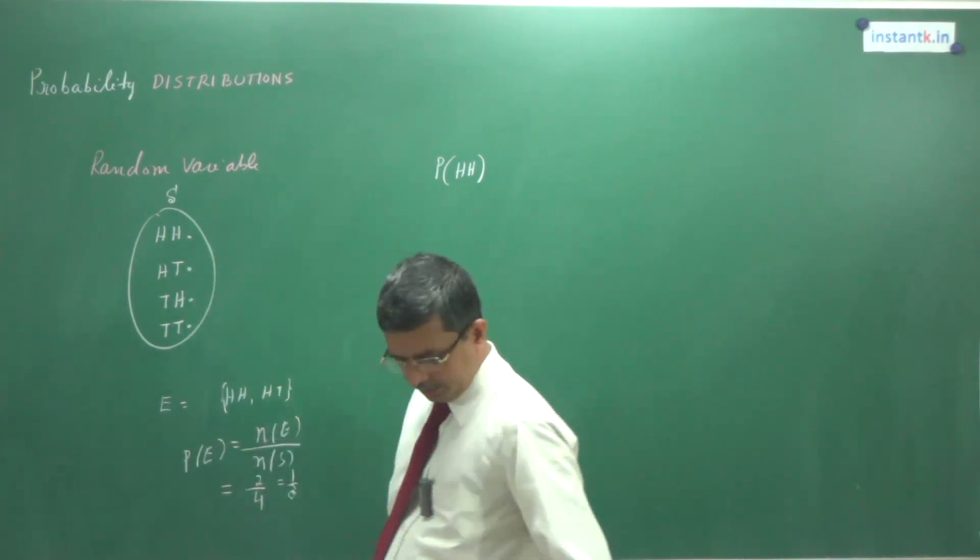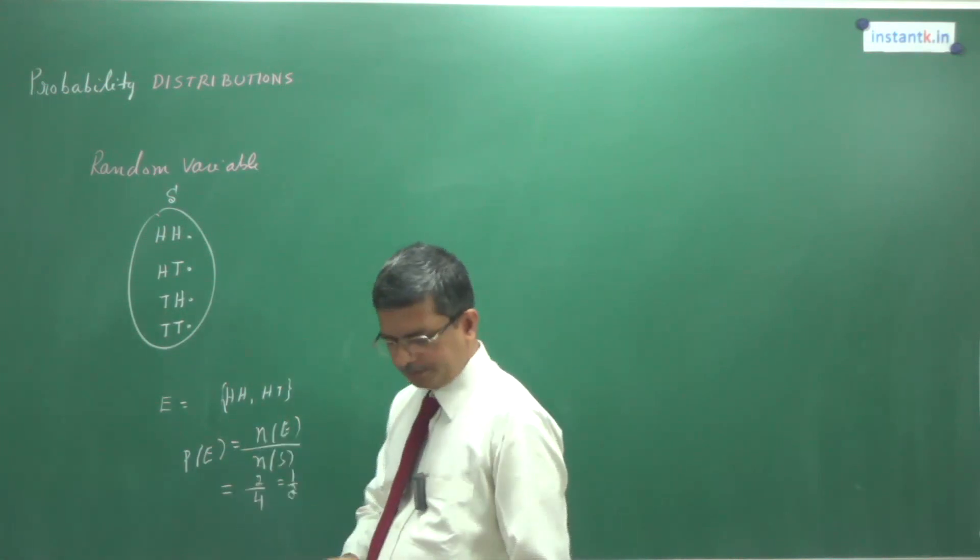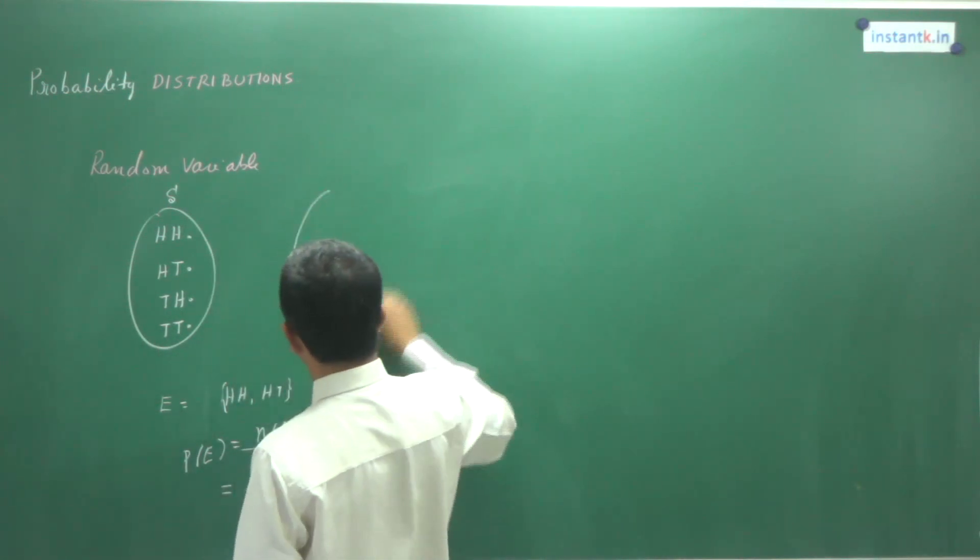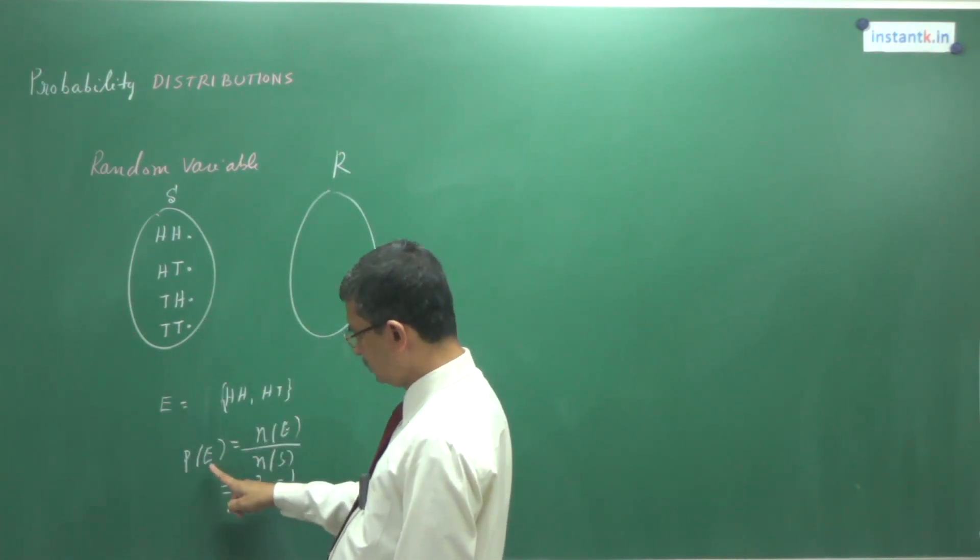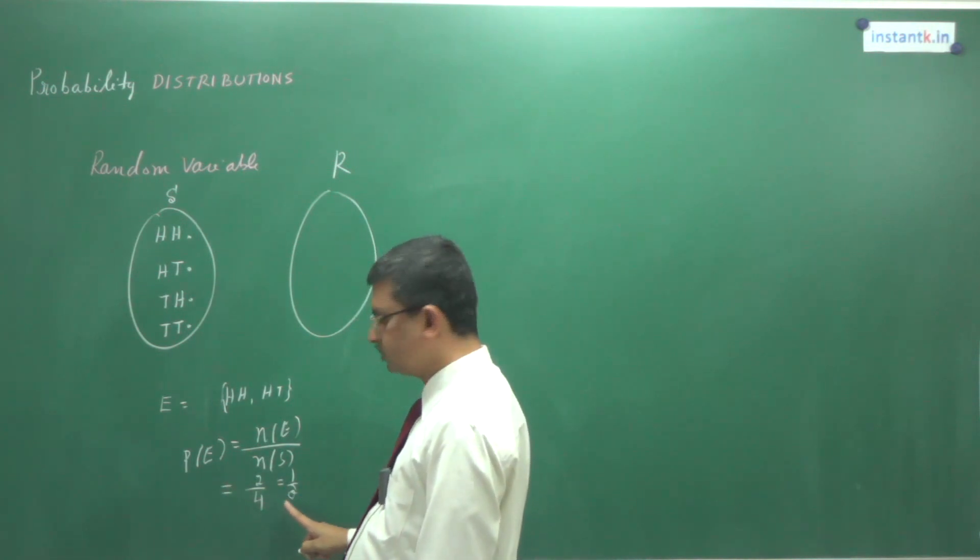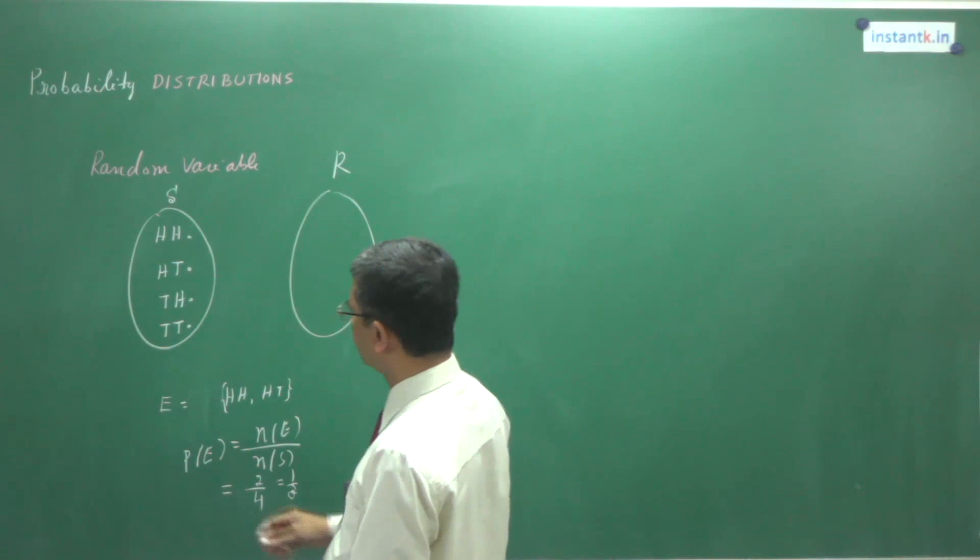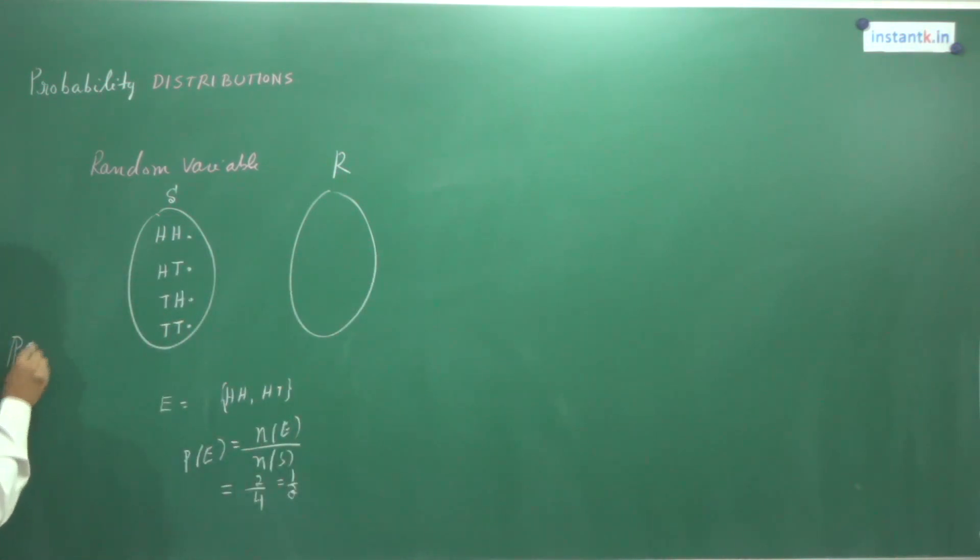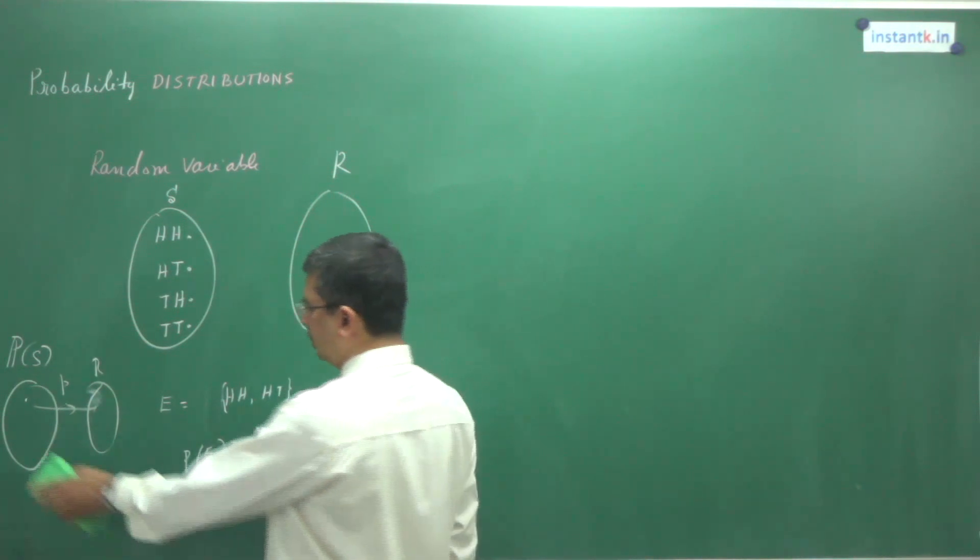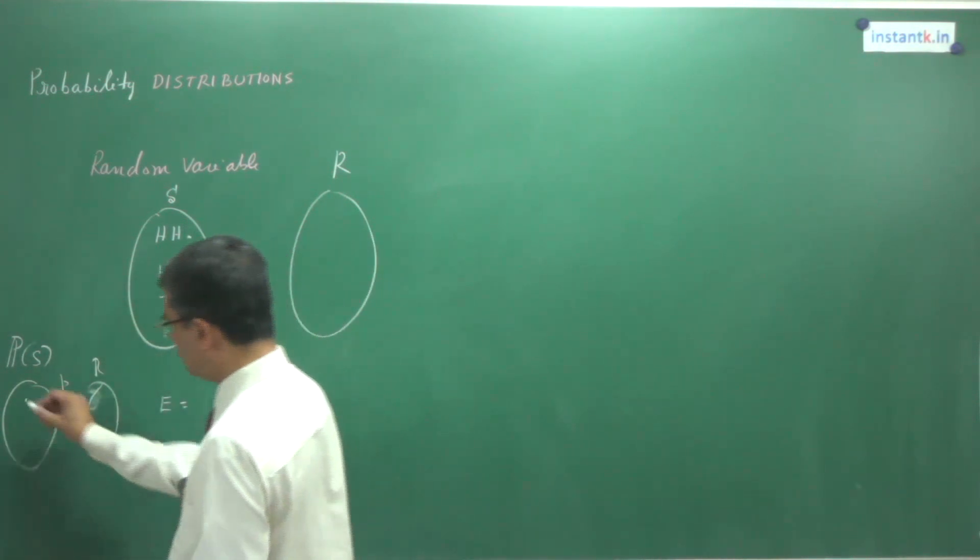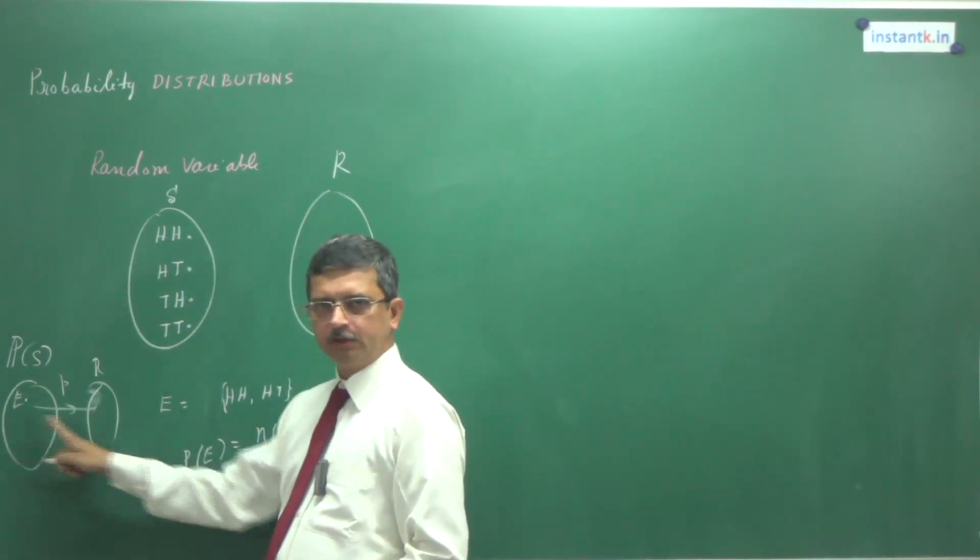Now, instead of that, for each element we associate a number, a real number. What is associated here is for each event we associate a real number. P of S, we have taken the power set of S. For each element we associate a real number here using the axiomatic definition. That is the probability. Don't confuse with that. Now, not for each—here all are events. For each event we associate it.